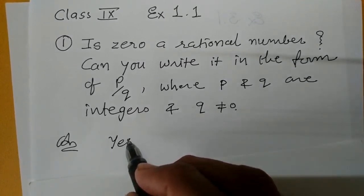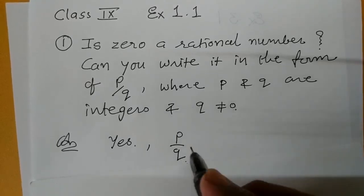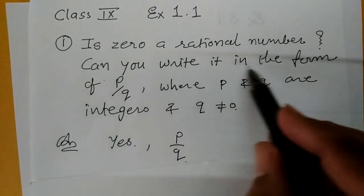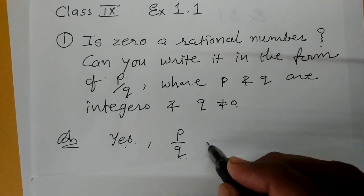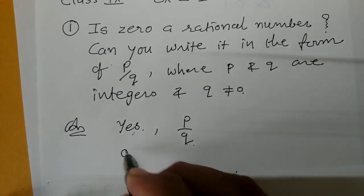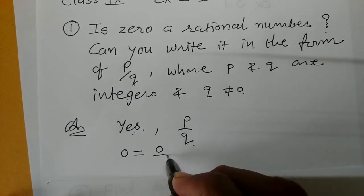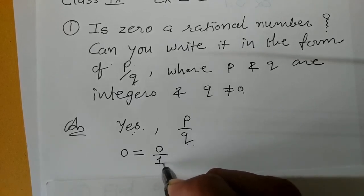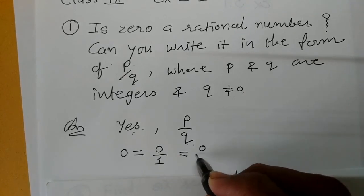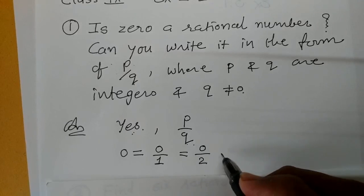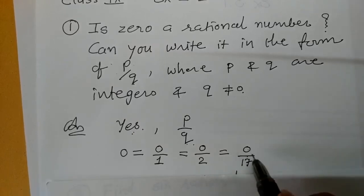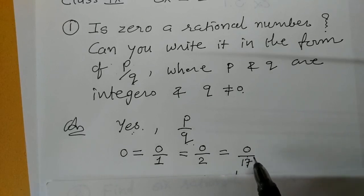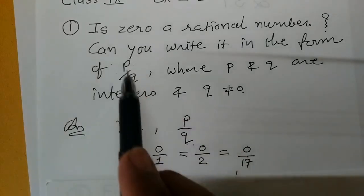A rational number can be represented in the form p/q. Can we write zero in the form p/q? Yes. Zero equals zero divided by one. You can also write zero upon two, or zero upon any number — zero upon 70, for example. Any number divided into zero always gives zero. So we can write zero in p/q form.